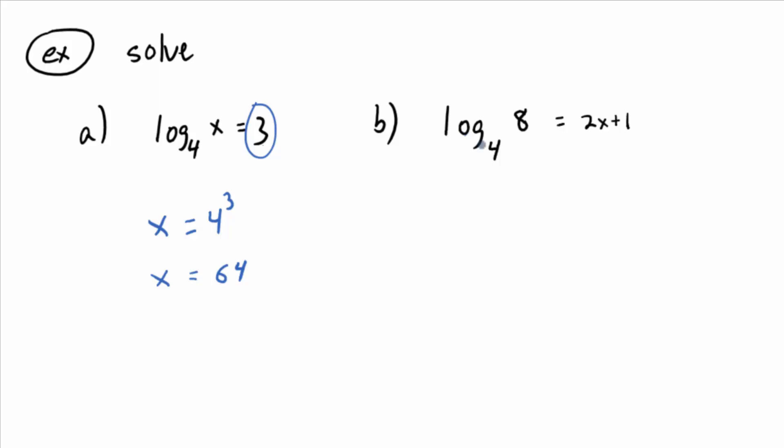All right, second equation. Log base four of eight is equal to two X plus one. Same idea. The only thing we know how to do at this point is convert. So what would this be if you convert? Four to the, what's the exponent? Two X plus one equals eight. Okay, it's not completely obvious, though, what X is in this case, is it? Okay, but what's true about both eight and four?